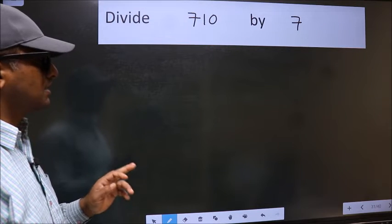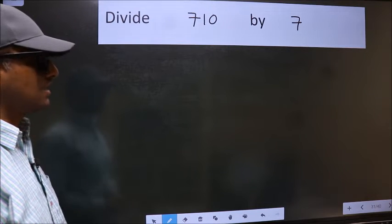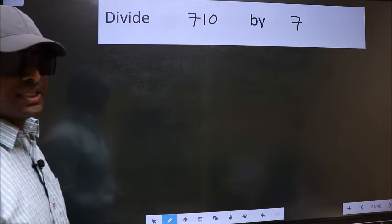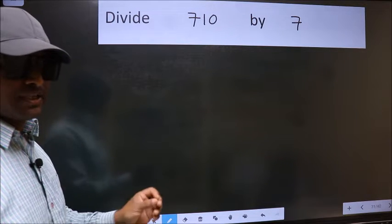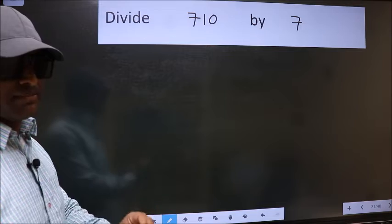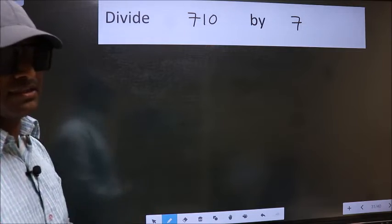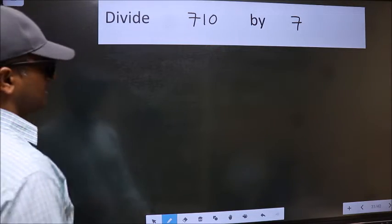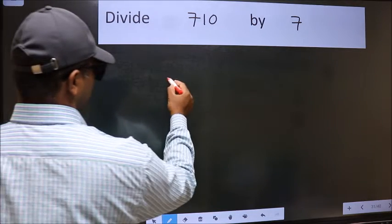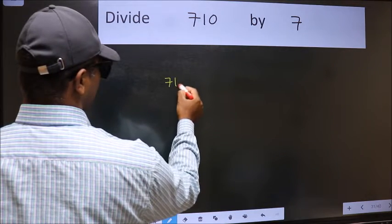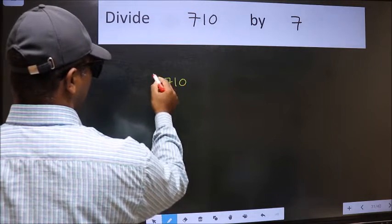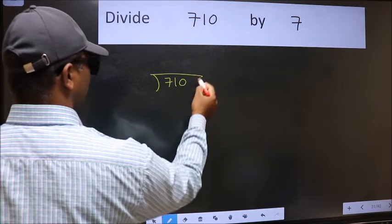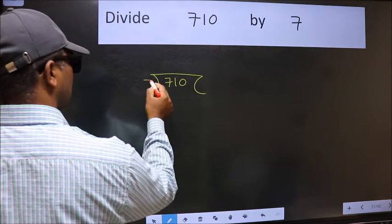Divide 710 by 7. To do this division we should frame it in this way: 710 here and 7 here.